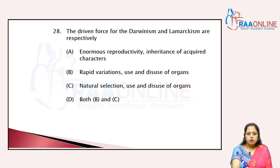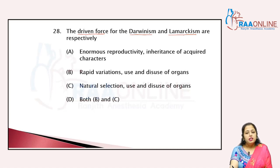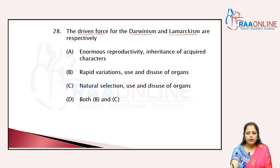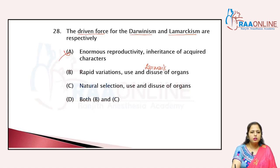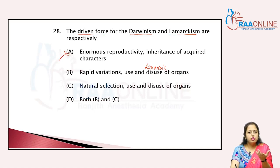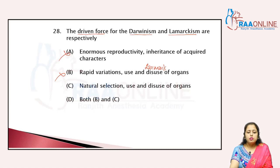The driving force for Darwinism and Lamarckism respectively: Darwinism represents enormous reproductive potential and natural selection; Lamarckism represents use and disuse of organs. Lamarck stated about the use and disuse of organs — the neck of the giraffe example. Natural selection is related with Darwinism, and use and disuse is Lamarckism. So the answer is C.